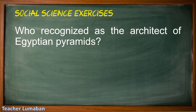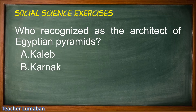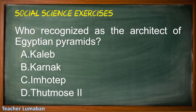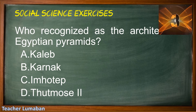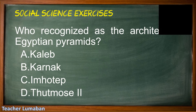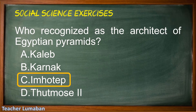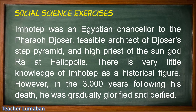Who is recognized as the architect of Egyptian pyramids? Letter A: Caleb. Letter B: Karnak. Letter C: Imhotep. Letter D: Thutmose II. Please choose the suitable answer in five seconds. Five, four, three, two, one. The correct answer is Letter C: Imhotep.